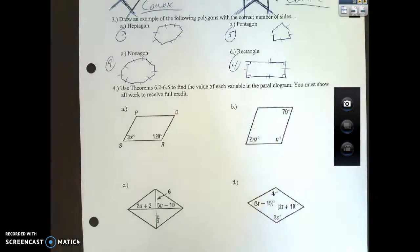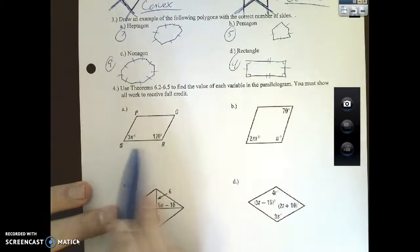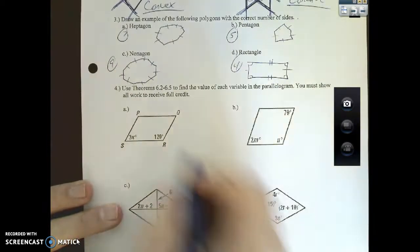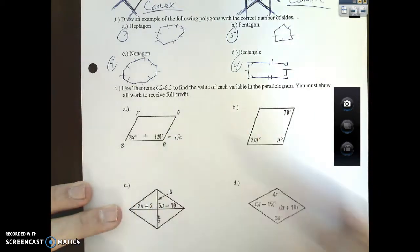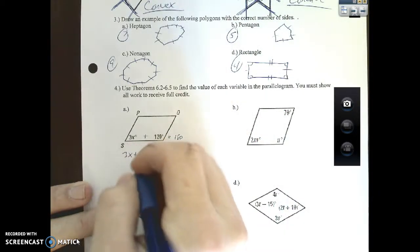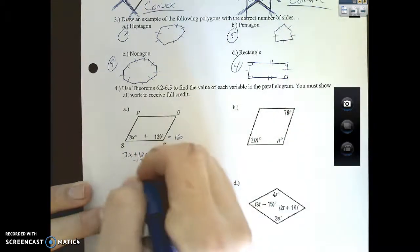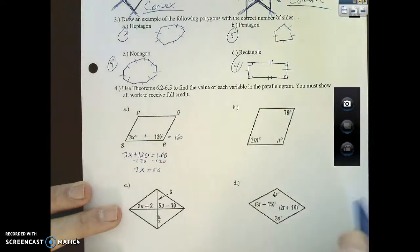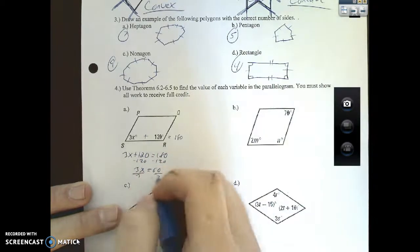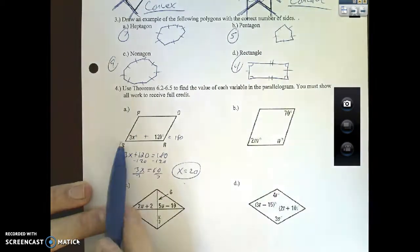Use the theorems to find the value of each variable in the parallelogram. You must show all work to receive full credit. What do you know about angles that are side by side inside a parallelogram? They have to be supplementary, which means you add together to equal 180. So 3x plus 120 equals 180, subtract, 3x equals 60, divide, x equals 20.